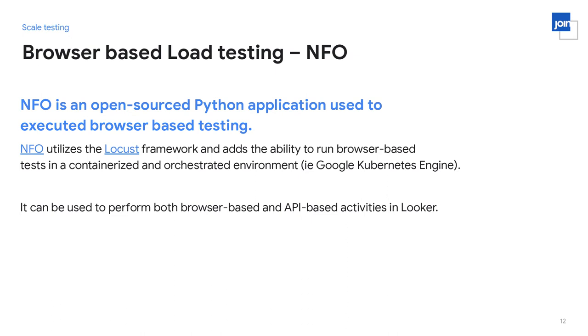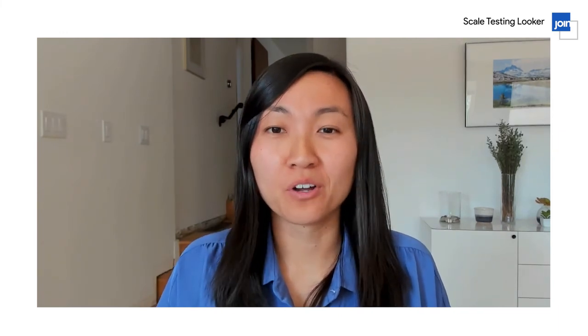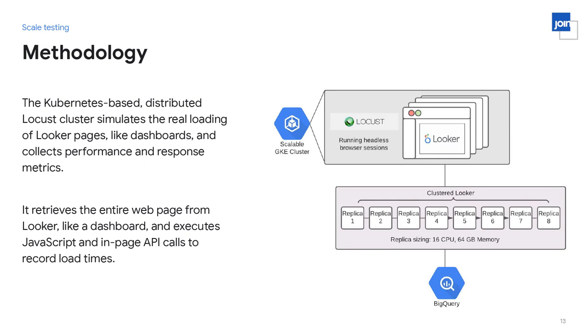There are many tools out there to help run load tests, and we have a Looker-developed open-source Python application called NFO that you can use. NFO utilizes Locust, which is a browser-based testing framework, and adds the ability to run those browser-based tests in a containerized and orchestrated environment — in this case, Google Kubernetes Engine, or GKE. It can be used to perform both browser-based and API-based activities in Looker. We've set up a scalable GKE cluster hosting our Locust clusters, where browser sessions are spawned and loading Looker activity, which is measured for performance and response. This is powered by a Looker instance connected to either your production database or a test database that closely mimics your production dataset.